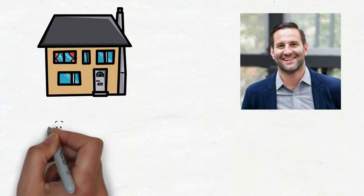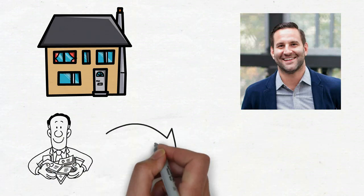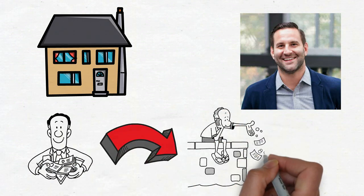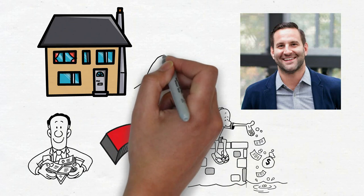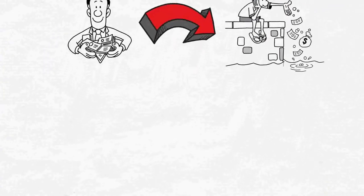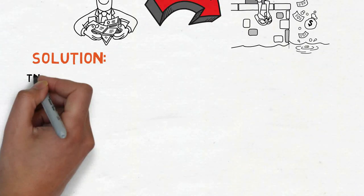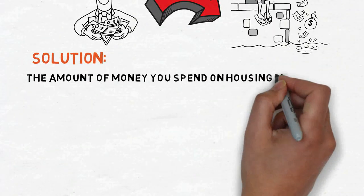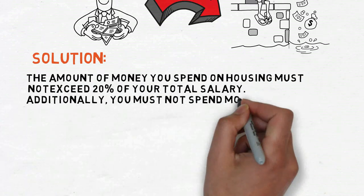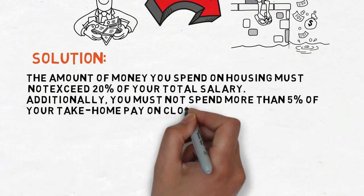CEO of Student Loan Hero Andy Josue recalled meeting many people with above-average incomes who could have saved money but instead ended up paying a lot for rent when he briefly resided in New York City. That's why you need to start keeping track of every single expense you incur. Solution: The amount of money you spend on housing must not exceed 20% of your total salary. Additionally, you must not spend more than 5% of your take-home pay on clothing.